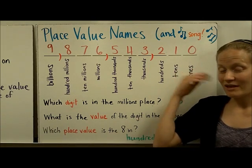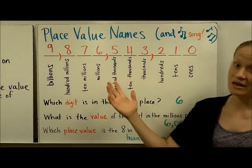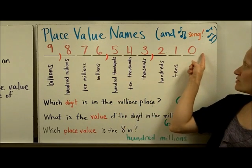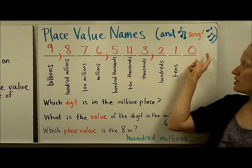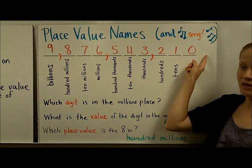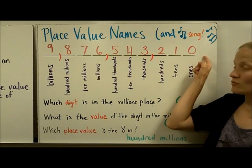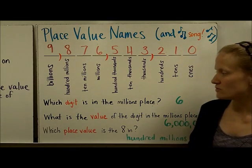So I think if you get that song in your head, you'll be able to quickly find the place values on any number that you're given. Remember though, that there is sort of an invisible decimal right here. The decimal point always falls to the right of the ones place, and when we start talking about decimals later in the year, that'll be really important to know.